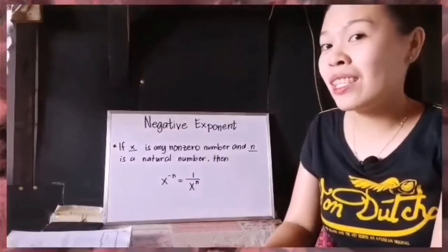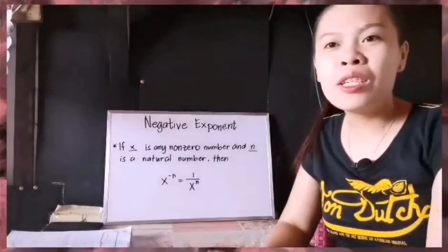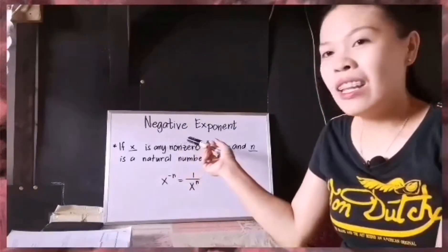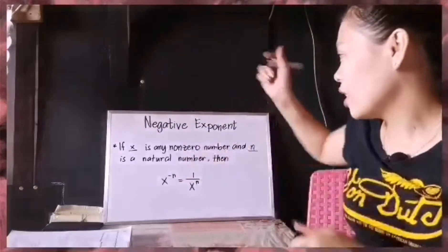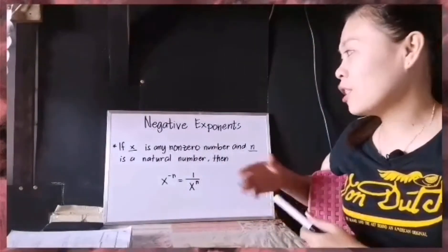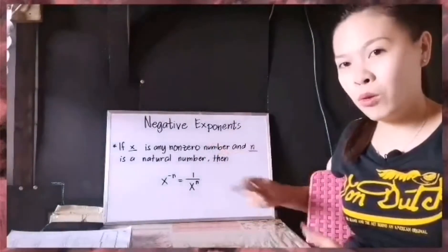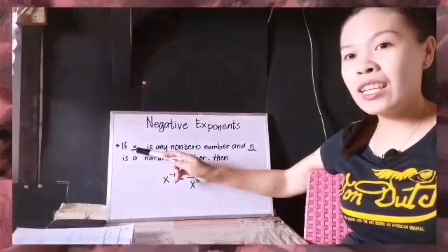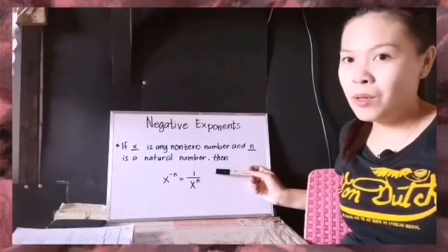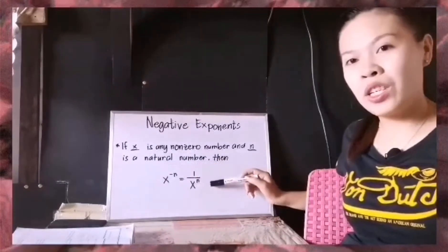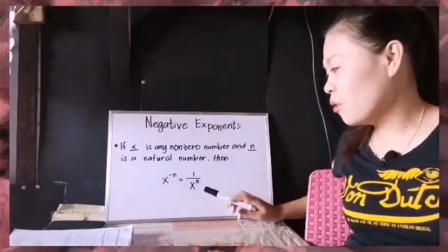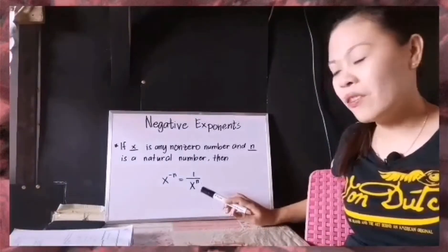So let's not waste our time, Matlovers. This time we're going to discuss another type of exponent and that is negative exponents. The rule says that if X is any non-zero number and N is a natural number, then X to the power of negative N equals 1 over X to the power of positive N.